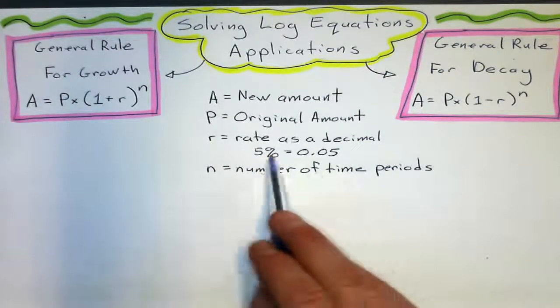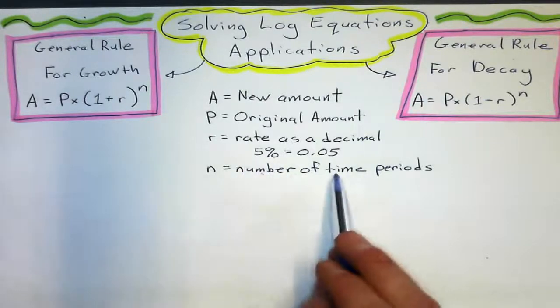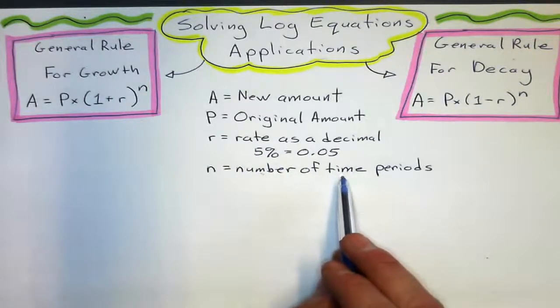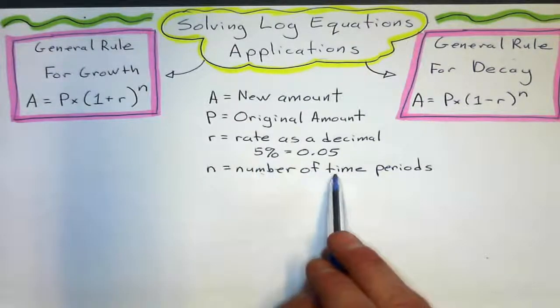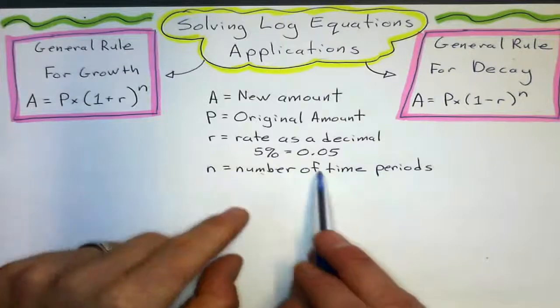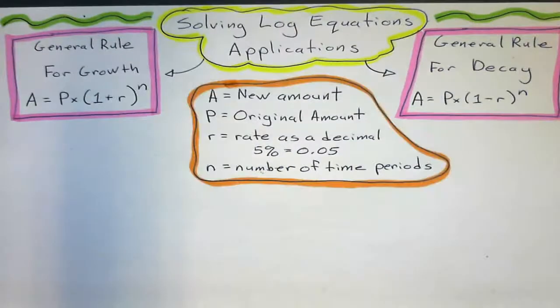So just a thing on the number of time periods and the rate. These two guys need to be consistent. So, if the rate is 5% per year, then we want our time periods to be in years as well. If this is 5% per hour, we want our time periods to be in hours as well.